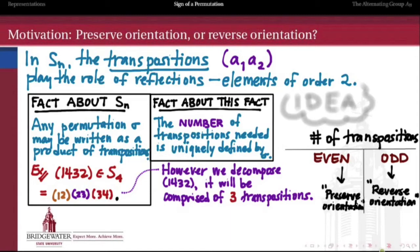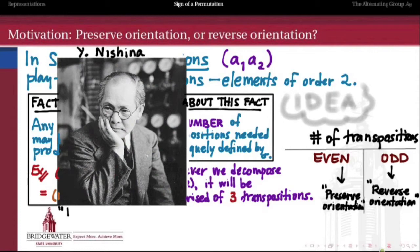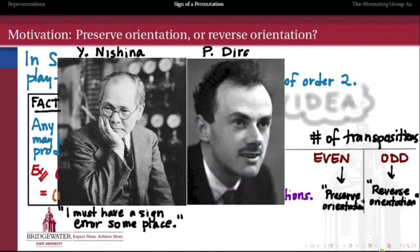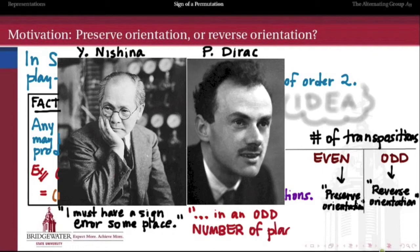One of my favorite stories is about the physicist Paul Dirac. The rumor was that Dirac used to sleep through invited lectures. During a lecture by Yoshio Nishina, Nishina finished a complicated derivation with an unexpected extra minus sign and remarked he must have had a sign error somewhere. Dirac woke up and corrected him, saying he must have had a sign error in an odd number of places. An odd number of sign errors gives the same wrong result as one sign error, while an even number of sign errors cancels out.